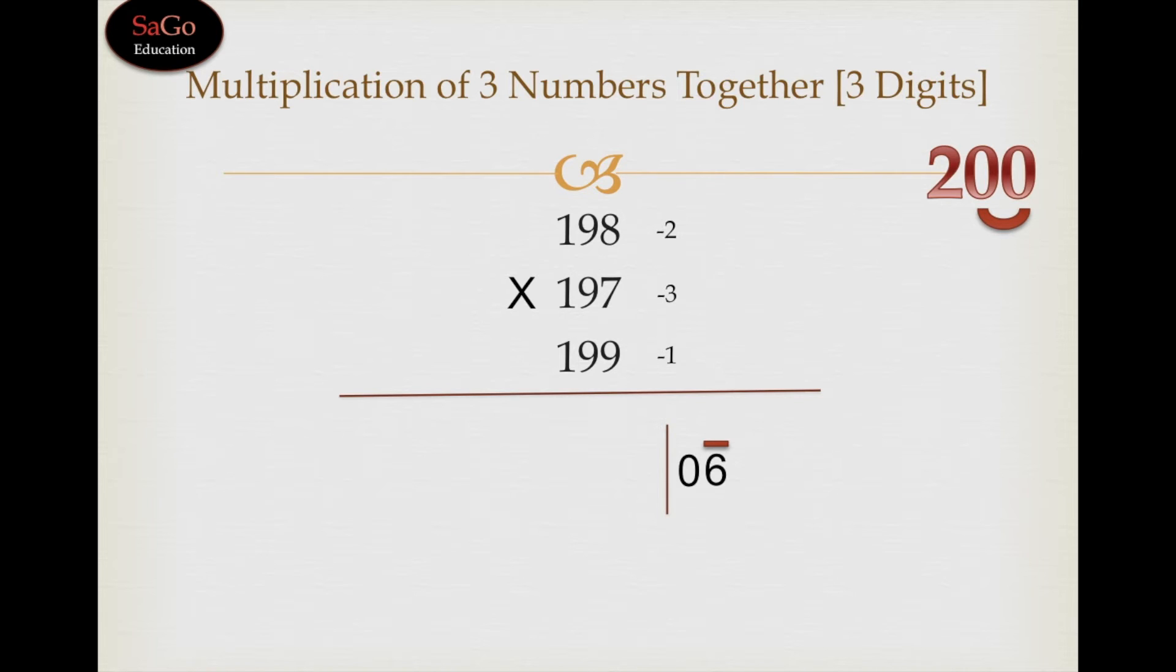Now make pairs of two digits each, as we did in the earlier question. Minus 2 times minus 3 gives us 6, write down 6. Minus 3 times minus 1 gives us 3, add 3 in it. And the last pair, minus 2 times minus 1 gives us 2, add 2 in it. When we add these numbers, it will give us 11.